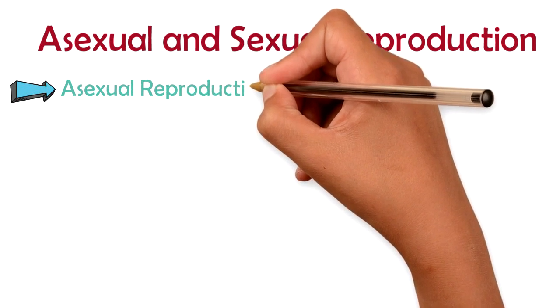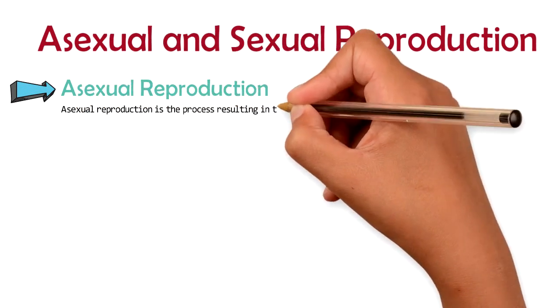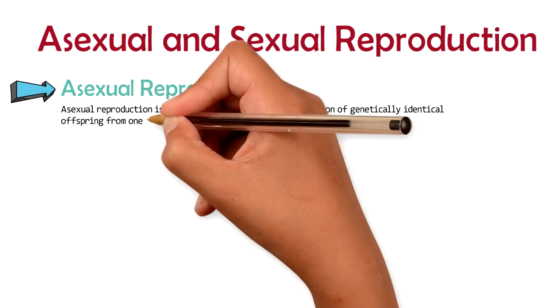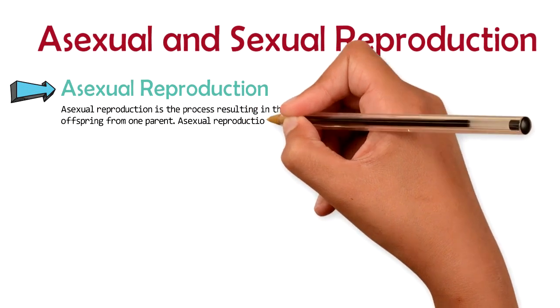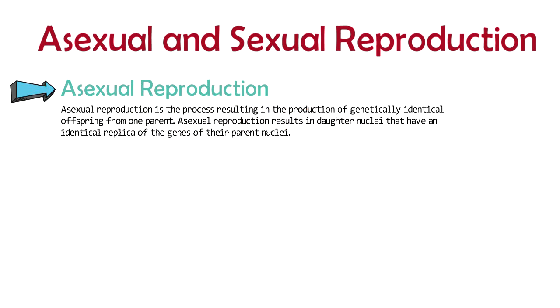Asexual reproduction. Asexual reproduction is the process resulting in the production of genetically identical offspring from one parent. Asexual reproduction results in daughter nuclei that have an identical replica of the genes of their parent nuclei.